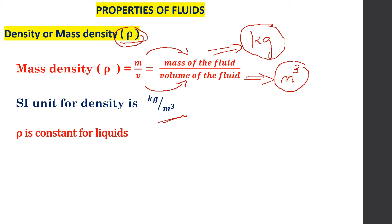For a liquid, density is mass of the liquid divided by volume of the liquid, and this density is constant for liquids. For example, if you buy one liter of milk, the mass and volume of the milk do not change, so mass by volume — rho — is constant for liquids.